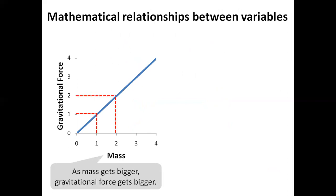Mathematical relationships between variables. Let's look at the relationship between mass and gravitational force. When mass is one, gravitational force is one. When mass is two, gravitational force is two. As mass gets bigger, gravitational force gets bigger. This relationship is called directly proportional.